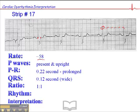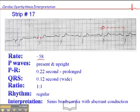When you see a wide QRS but there's a P wave preceding each of the QRSs, we know we have aberrant conduction. The rhythm is regular, and the interpretation is sinus bradycardia with a heart rate of 58 with aberrancy.